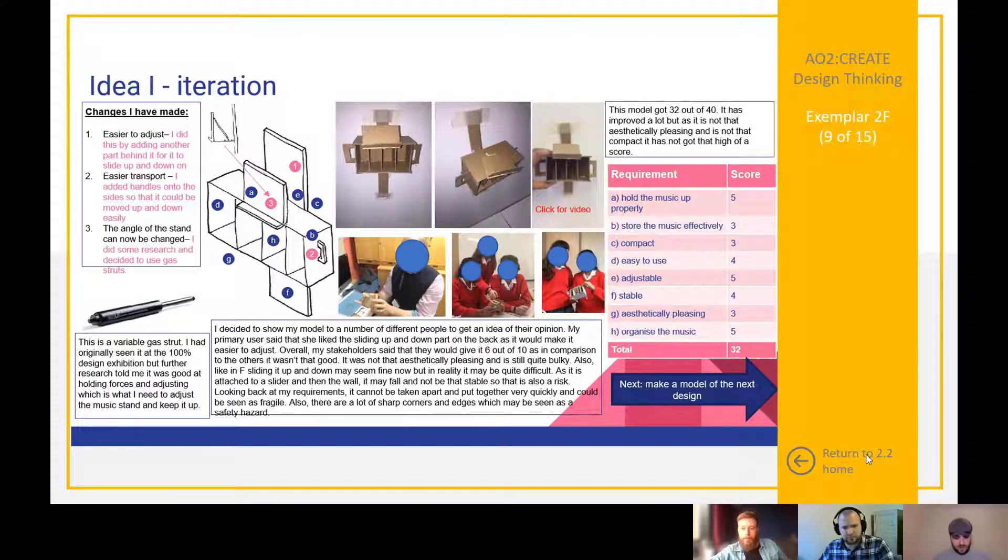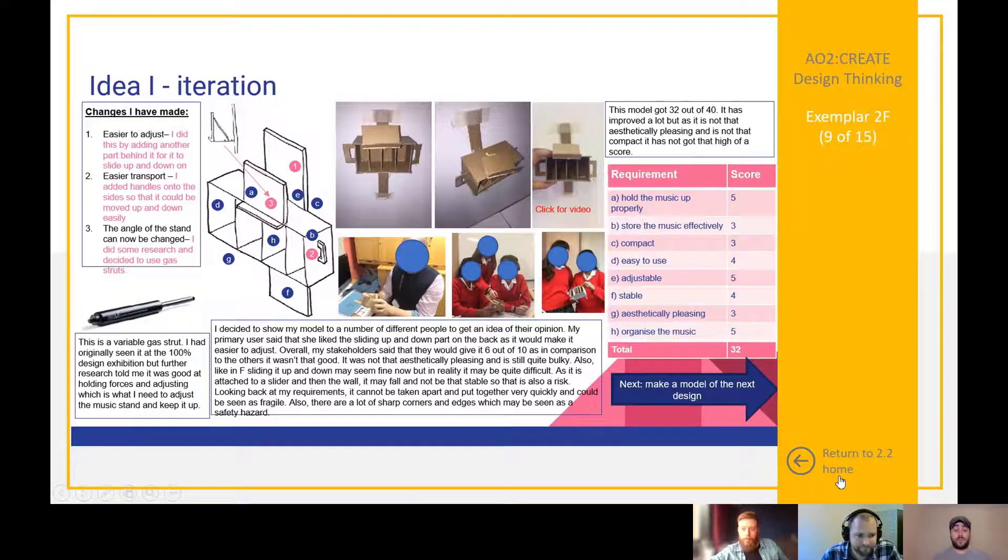Just before we close on this section before we go to 2.3, looking at the criteria in the higher mark bands, it does say appropriate modeling and testing of materials, components, and processes throughout. Using that word 'appropriate' means that your modeling needs to be clear, it should be on the page, it isn't just you coming up with something and taking a snapshot. It needs to be relevant to your project. It also says all relevant requirements are considered and conflicts resolved through a structured approach, so this is you recording your thought process. You might want to highlight that, but you are basically signposting the instance where you decide to change an idea and why. And then stakeholders and users test the models and give feedback to inform iterations.